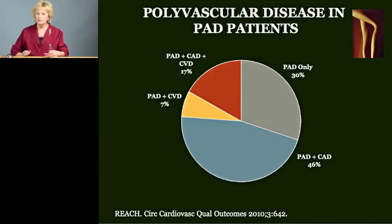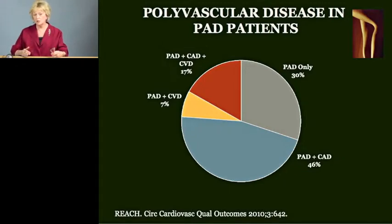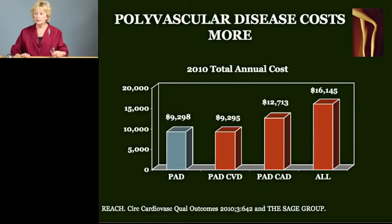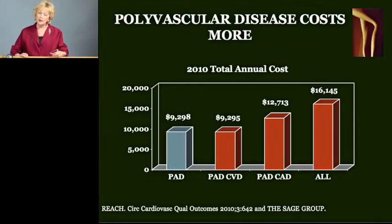Another way to look at costs is by the presence of polyvascular disease. Most PAD patients do not have PAD in isolation — only about 30% do. About half have PAD along with coronary artery disease, and the rest have PAD in conjunction with some combination of coronary or cerebrovascular disease. For PAD-only patients, the average per patient cost is about $9,300 per year, similar to PAD with cerebrovascular disease. However, PAD with coronary disease rises to about $12,700, and patients with all three diseases exceed $16,000 per year.